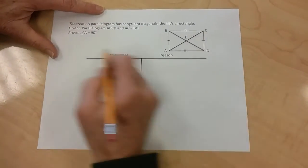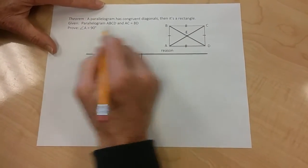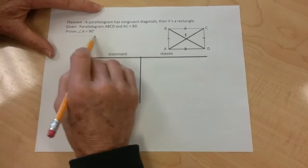We know that a rectangle's got to have a 90-degree angle in it, so that's what we're going to end up using as the proof.